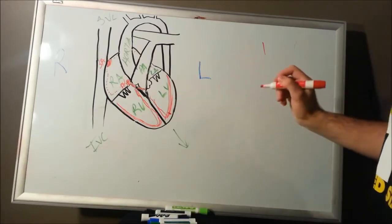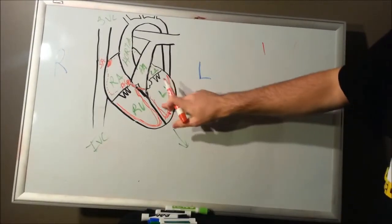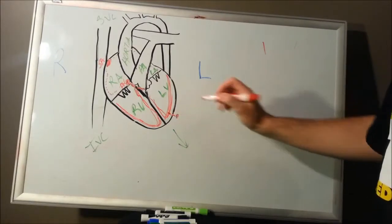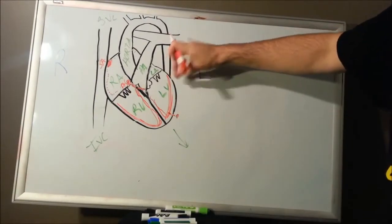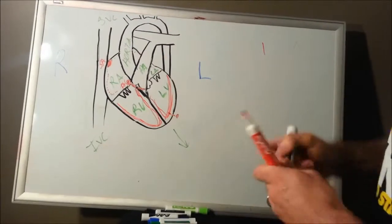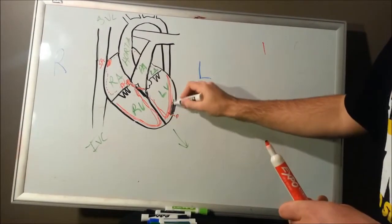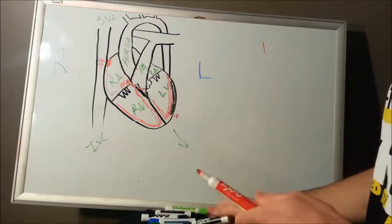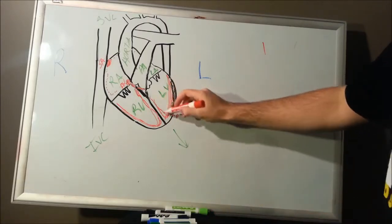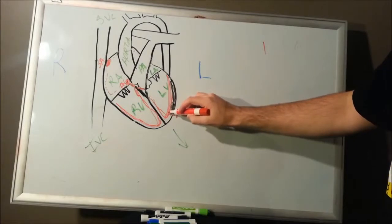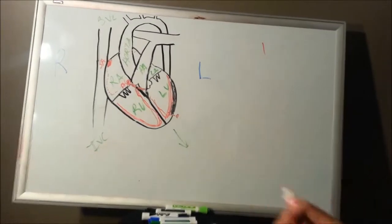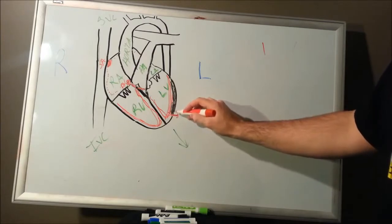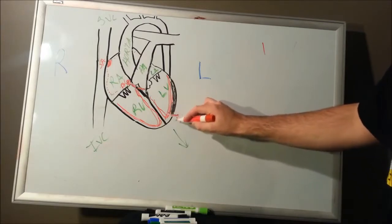Through your Purkinje system, it's then going to go to your myocardium. It's going to start on your endocardial side — the inside layer — and then work its way eventually to the outside layer. Your heart muscle layer is not too thick, but it is thick enough, and especially in your left ventricle it's the thickest. So once it hits your Purkinje system, it's first going to depolarize the endocardial layer — the endomyocardial layer — then work its way up through the myocardium to the epicardial layer.